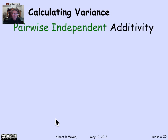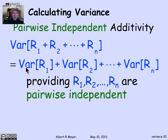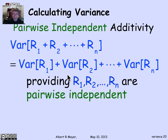Another rule for calculating variance — perhaps the most important general one — is that variance is additive: the variance of a sum is the sum of the variances. Unlike expectation, where additivity holds without any side conditions, variance is additive only when the variables being summed are pairwise independent. This is because variance involves squaring, so when you expand the algebra you get quadratic cross-terms E[Ri · Rj] that need to factor as E[Ri] · E[Rj], which requires only pairwise independence. The proof is in the text.